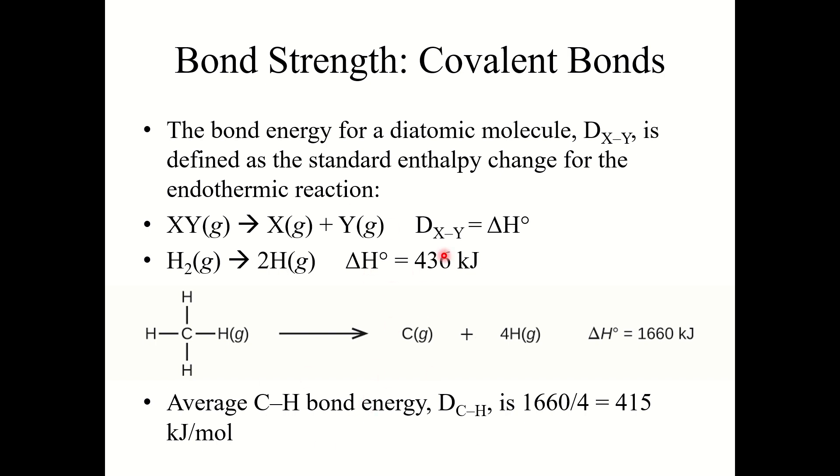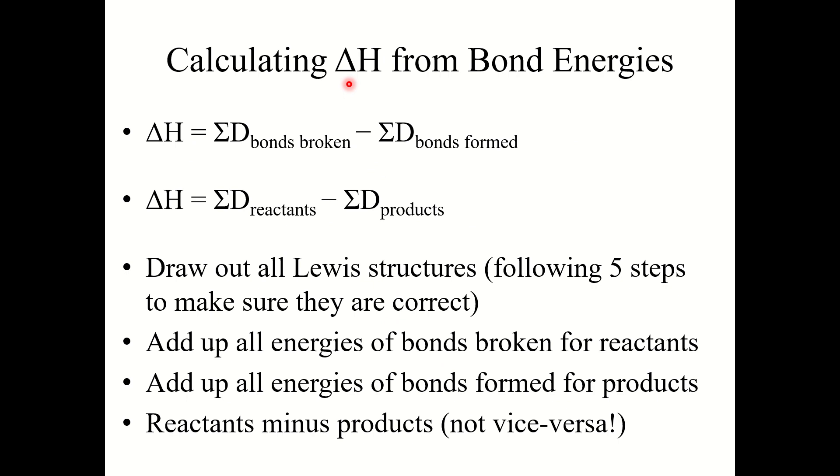Now these bond energies are very useful because we can use them to calculate the delta H or enthalpy change for any reaction. This is the third way we can solve for the enthalpy change of a reaction. The enthalpy change of a reaction equals the sum of the bonds broken minus the bonds formed.